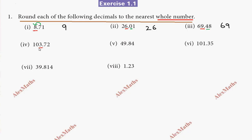Underline the digit — we need a whole number, so underline the digit before the decimal point. After the decimal point there is a 7. Since 5 and more, the underlined value must increase. So add 1: the value becomes 10, carry over. Add the carry to the left side. Also, the digit after the decimal on the right is 8 — since 5 and more, increase by 1. 49 plus 1 is 50.